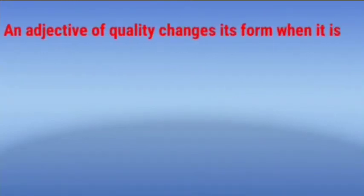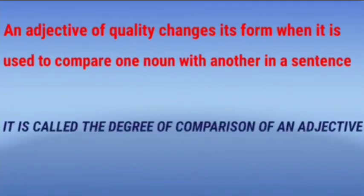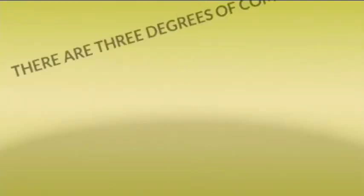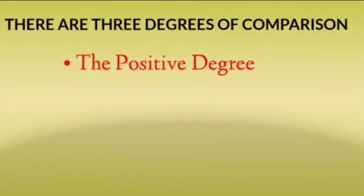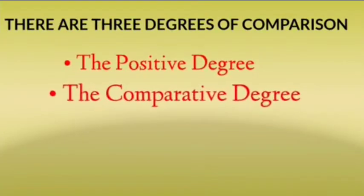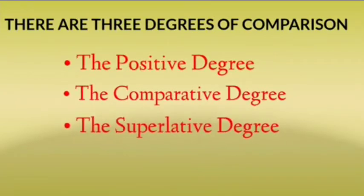An adjective of quality changes its form when it is used to compare one noun with another in a sentence. This is called the degree of comparison of an adjective. There are three degrees of comparison: the positive degree, the comparative degree, and the superlative degree.